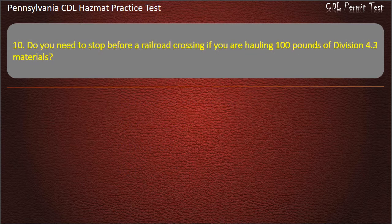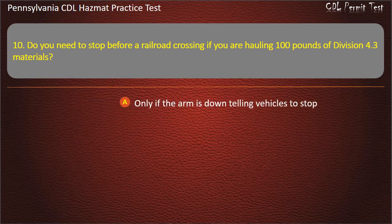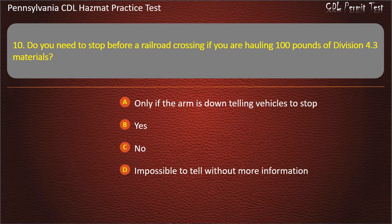Question 10. Do you need to stop before a railroad crossing if you are hauling 100 pounds of Division 4.3 materials? Options: Only if the arm is down telling vehicles to stop; Yes; No; Impossible to tell without more information. Answer: Yes.